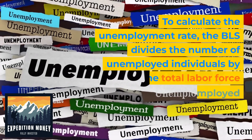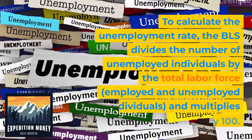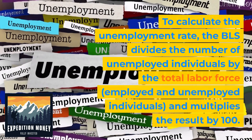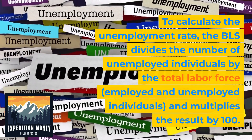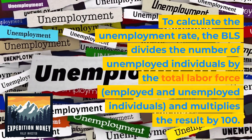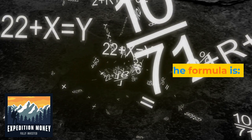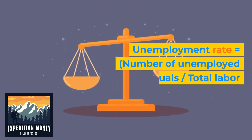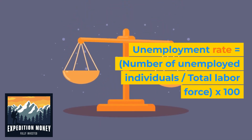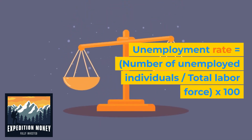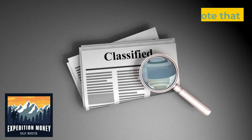To calculate the unemployment rate, the BLS divides the number of unemployed individuals by the total labor force and multiplies the result by 100. The formula is: unemployment rate equals the number of unemployed individuals divided by the total labor force, times 100.